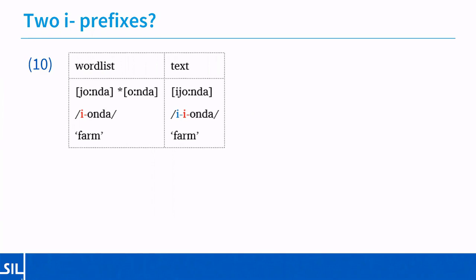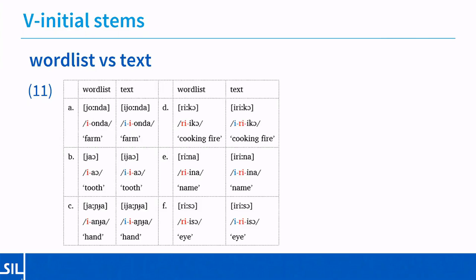One important thing to note is that the initial E in the word list example is obligatory — pronunciation without this E would be ungrammatical. So this E is not the optional prefix. Looking at all of the vowel-initial stems, we get the same pattern: the normal class five prefix appears in word list examples, but when the class five noun appears in a longer stretch of text, another E is added to the beginning. This pattern also works for consonant-initial roots, but since the prefix for these is analyzed as the zero prefix, it's not quite so visible.